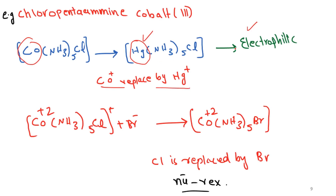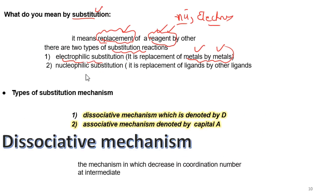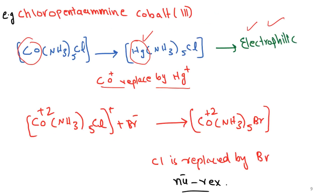The other type is the nucleophilic substitution reaction. In this reaction, one ligand dissociates from the complex and another ligand replaces it at that position. For example, in this example, the chloride ligand is replaced by a bromide ligand, so this is a nucleophilic substitution reaction.